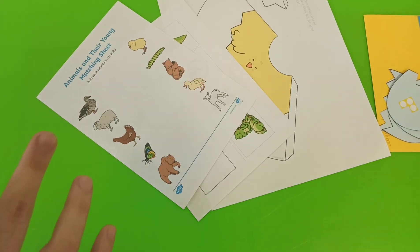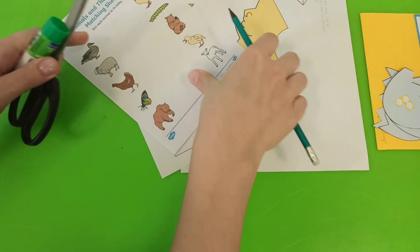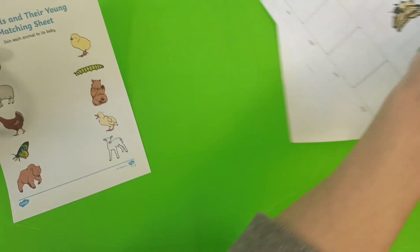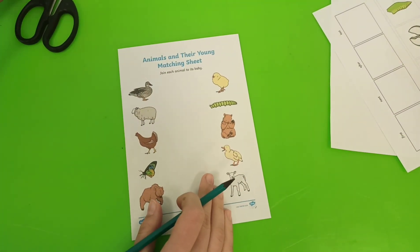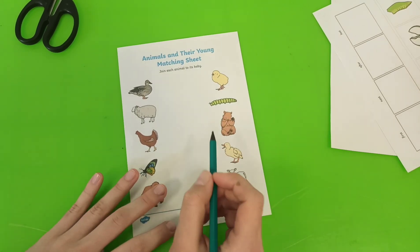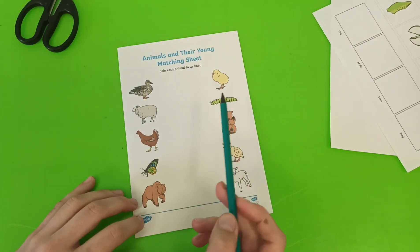Good morning! Let's start today with this activity. Animals and their young, matching sheet. Join each animal to its baby.